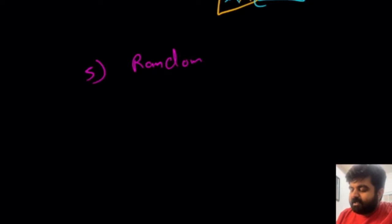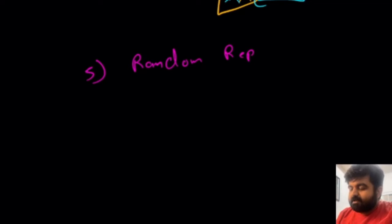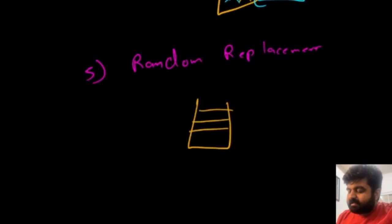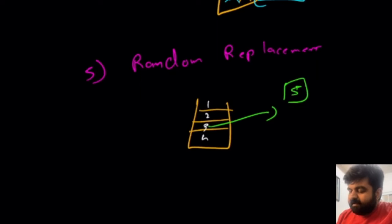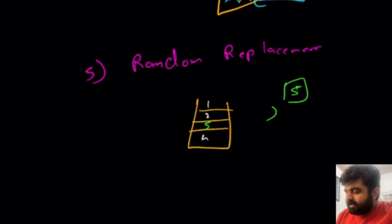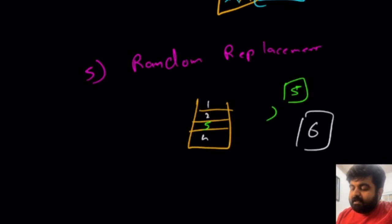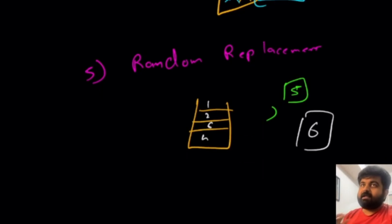The next one is Random Replacement. This is nothing but randomly picking any one value and removing it from the cache. This is not a very good approach because it doesn't keep track of the data currently present in the cache. For example, if we have values 1, 2, 3, 4 in the cache and want to add value 5, we randomly kick out any value. Then when adding value 6, it could happen that we remove value 5 that we just entered, because we are randomly choosing elements to remove. So this is not a great strategy.